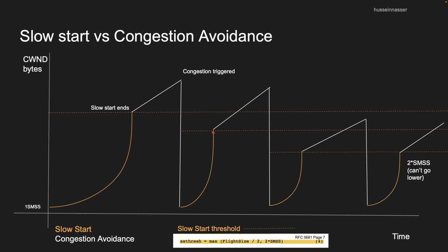We hit the threshold again, flip to congestion avoidance, detect congestion again, reduce back to one MSS, reduce the threshold again, and repeat. Eventually we reach the minimum of two MSS — we can't go lower than that because we take the maximum of the flight size and two MSS. So the minimum threshold is two MSS. After that the chart behavior stays at this minimum floor.